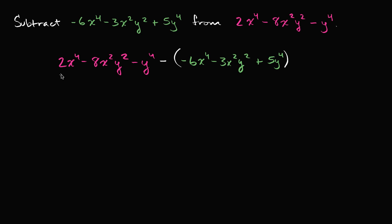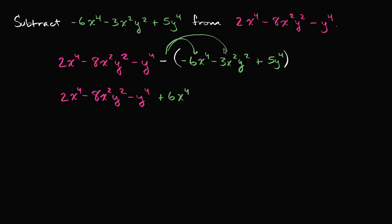So what's this going to be? I can just rewrite the magenta part: 2x to the fourth minus 8x squared y squared minus y to the fourth. And then I can distribute this negative sign. The negative of negative 6x to the fourth is going to be positive 6x to the fourth. The negative of negative 3x squared y squared is going to be positive 3x squared y squared. And then we're subtracting positive 5y to the fourth, so that's negative 5y to the fourth.